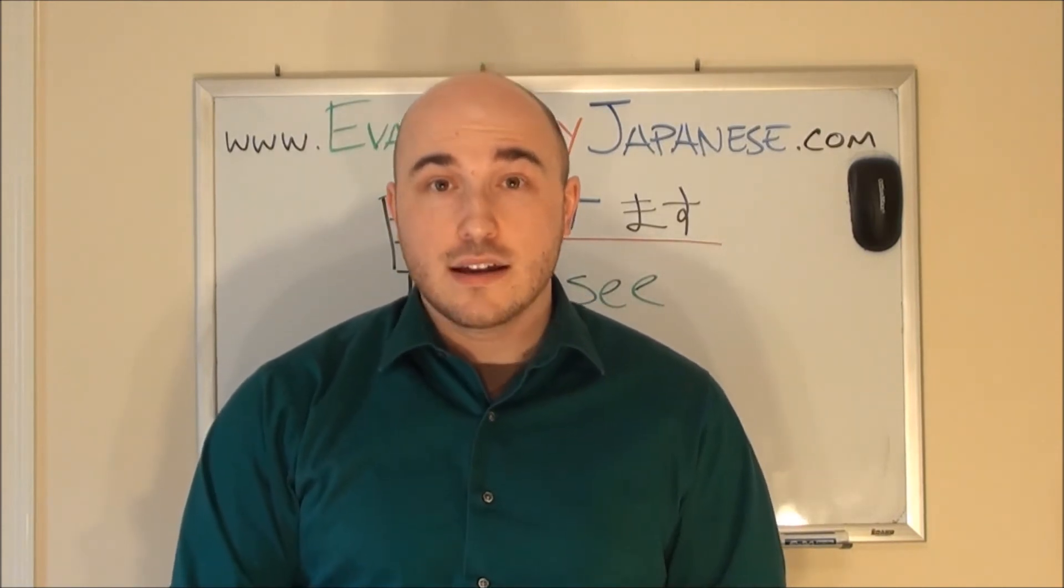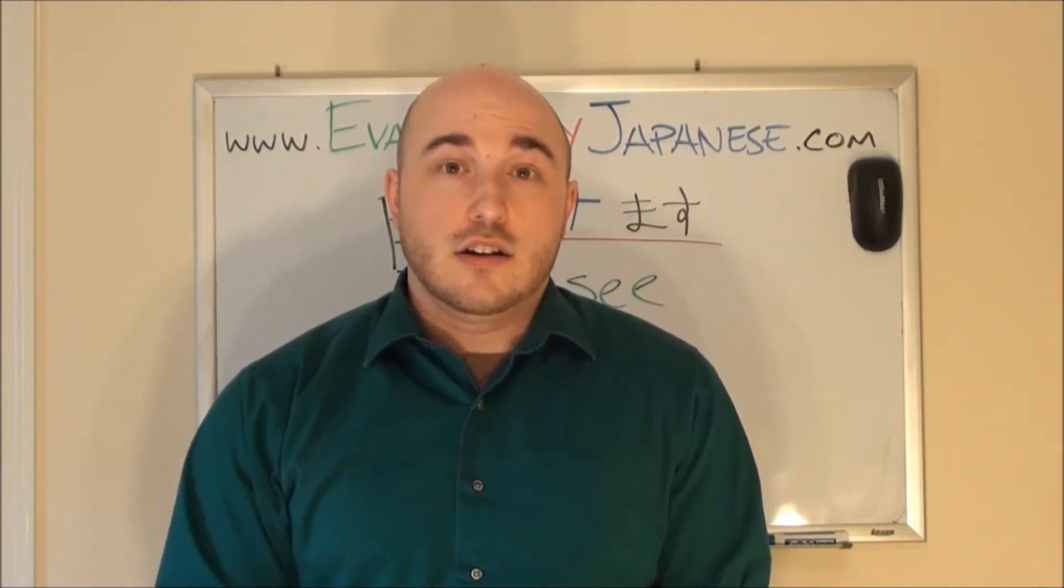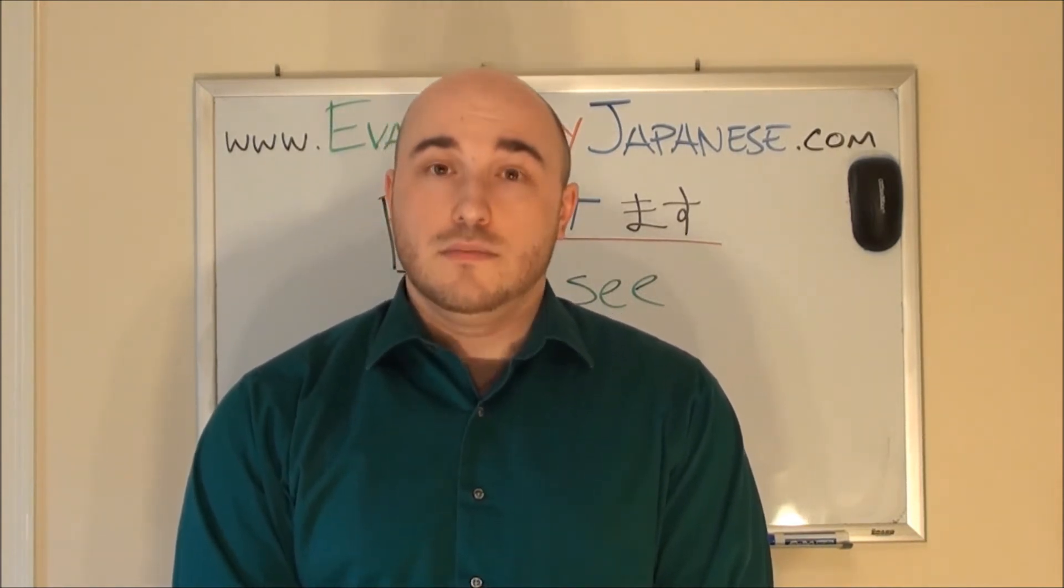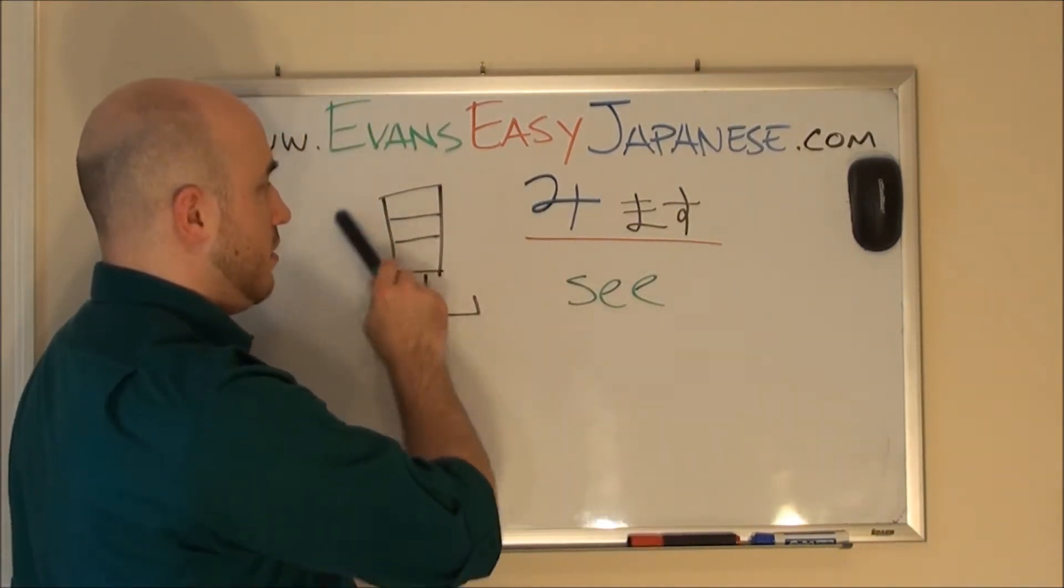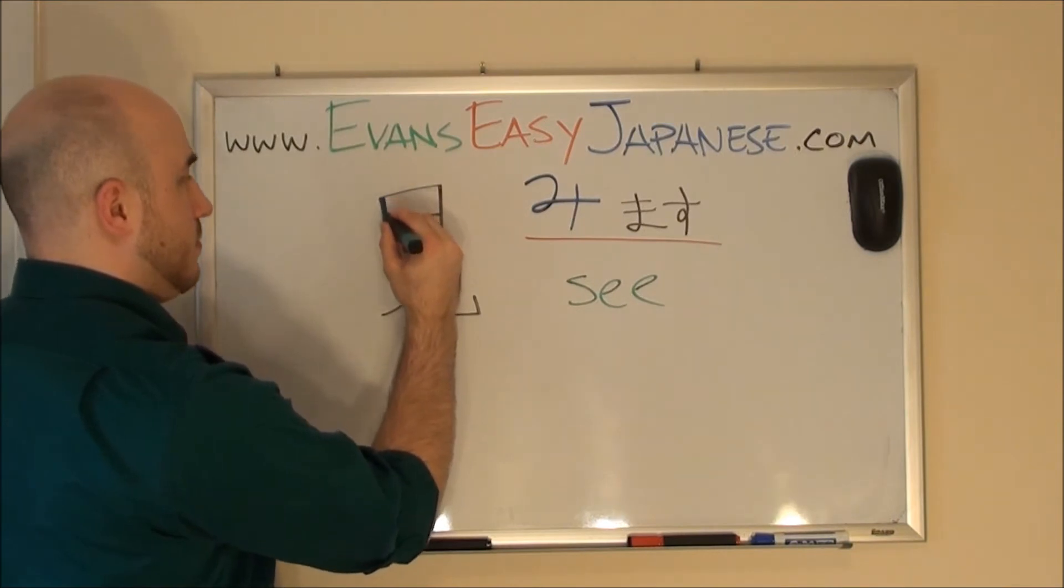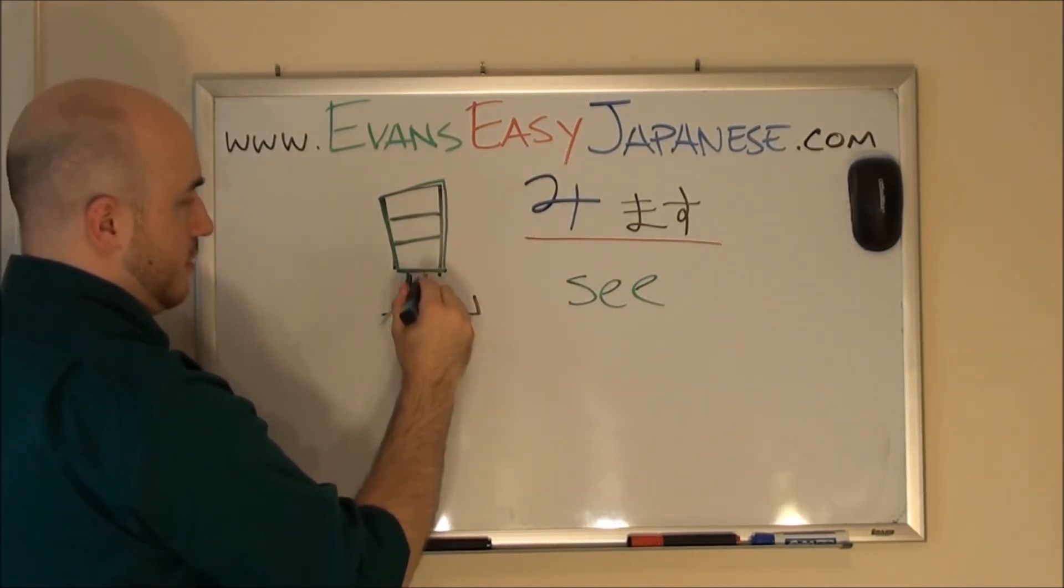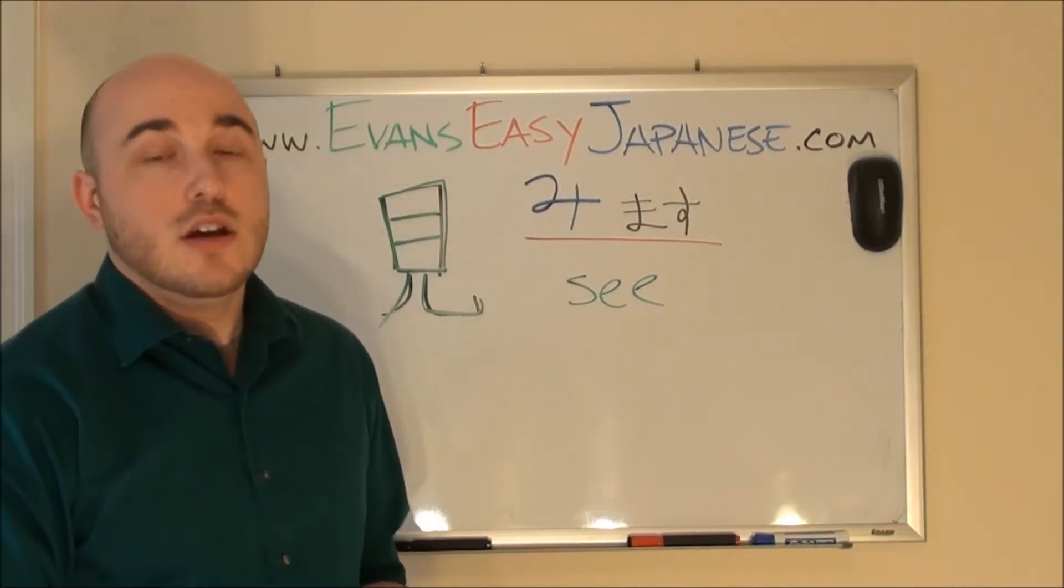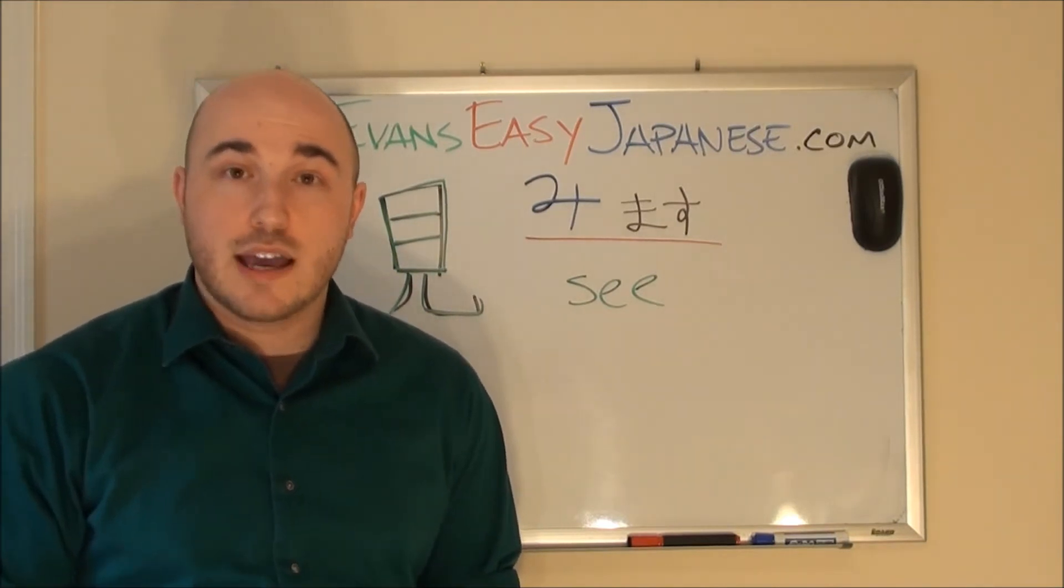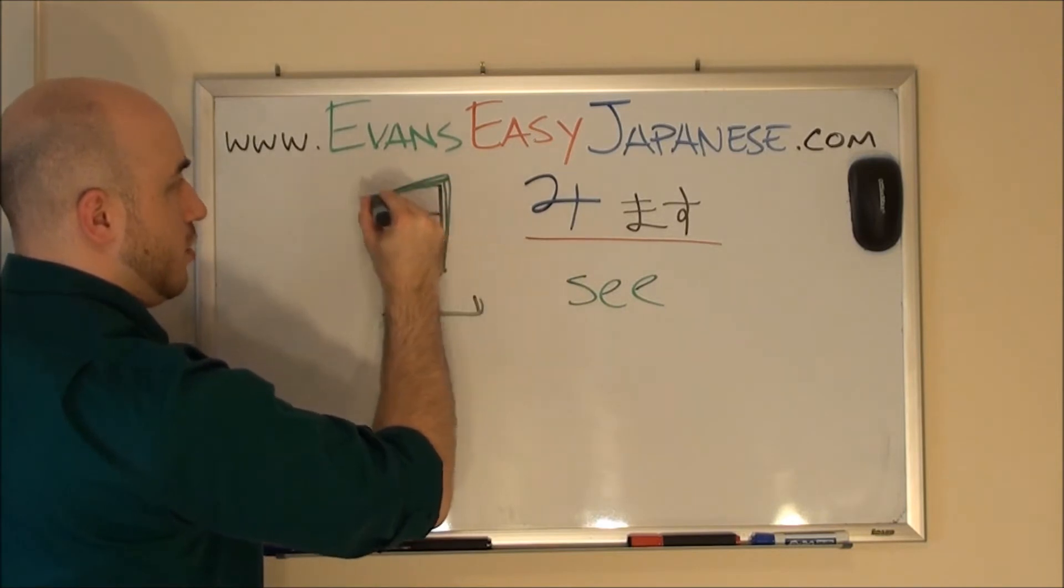The next kanji we're going to learn is the mi of mimasu. Sometimes an entire word is not one single kanji. So far, we've been learning kanji that are altogether one word. However, this one, especially with verbs, kanjis do not encompass the entire verb. So here we go. This is the mi of mimasu. Let's learn how to write this. One, two, three, four, five, six, seven. That's how we write it out. One more time. Notice how I do, this is, you see this square right here? That's another box, just like in nani.